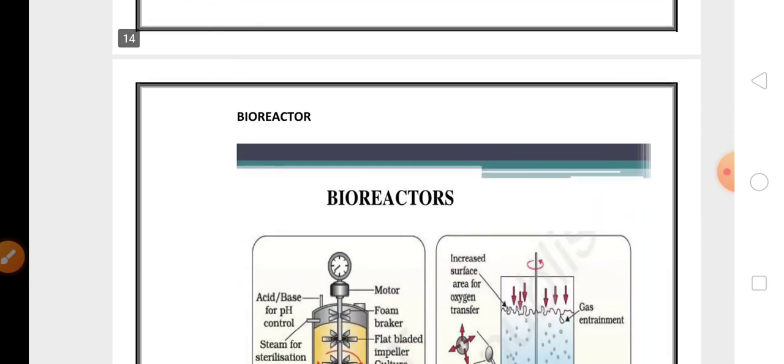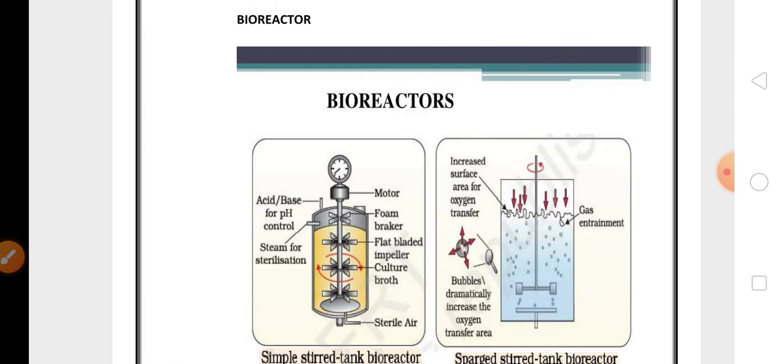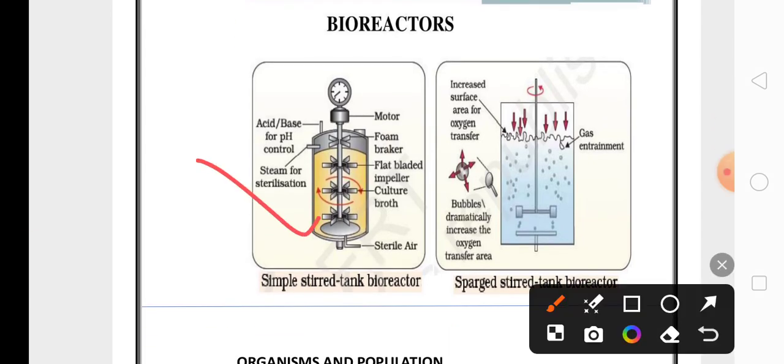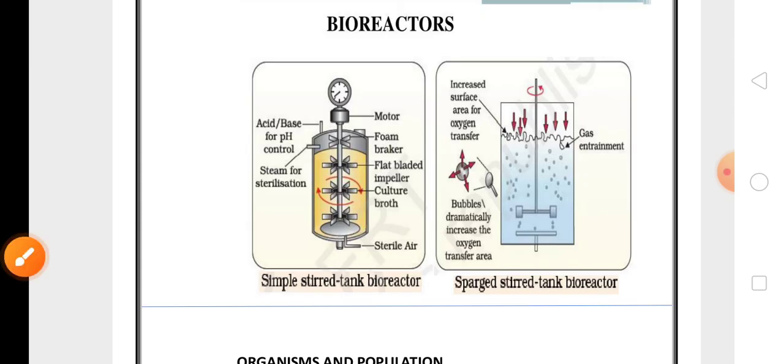Then this chapter has one more five marks question, that is PCR, polymerase chain reaction, which includes three steps are highly important. Then another five marks question is bioreactor. Two bioreactors are there, one is a simple stirred tank bioreactor which is highly asked, and one more important one is sparged stirred tank bioreactor.